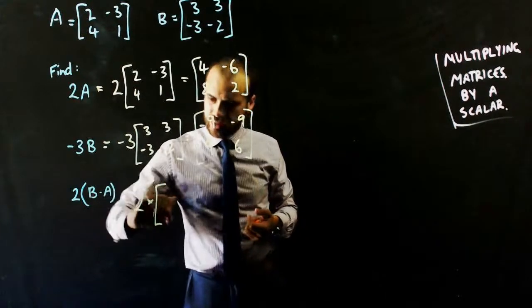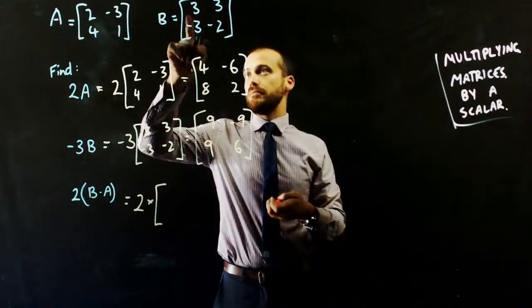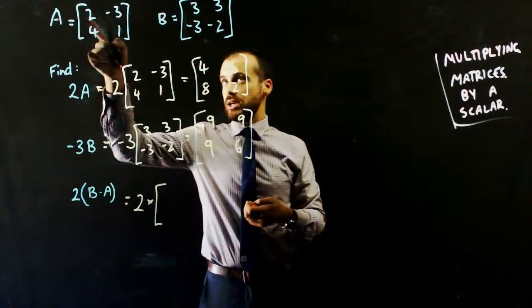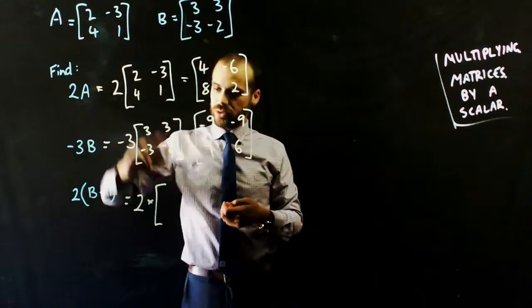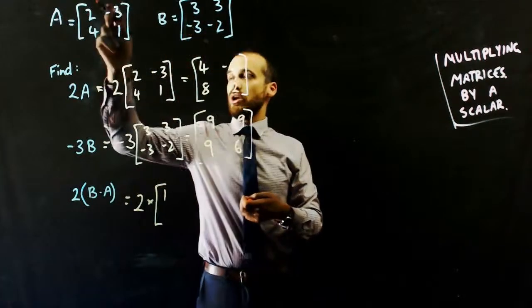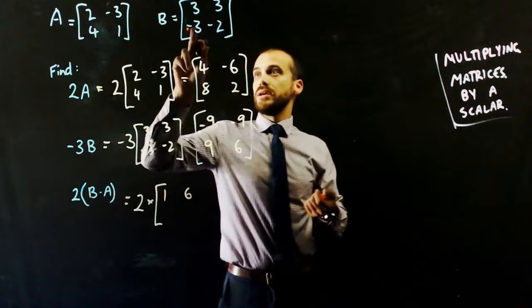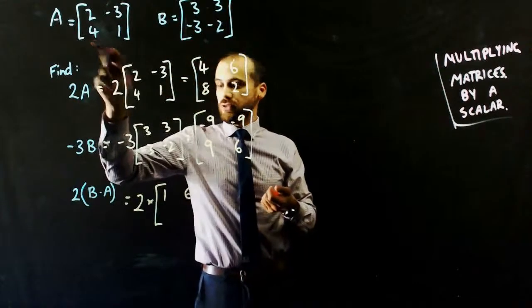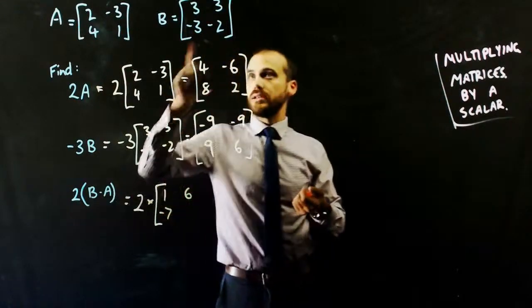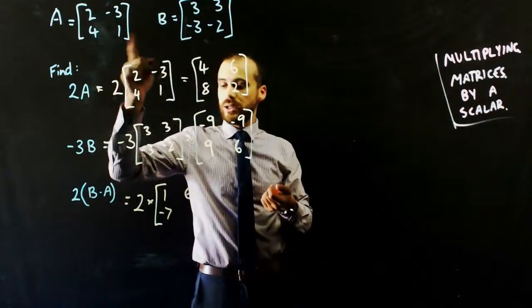So B minus A is going to be: 3 minus 2 is 1. 3 minus negative 3, so 3 minus negative 3 is 3 plus 3, which is 6. Negative 3 minus 4 is negative 7. And negative 2 minus 1 is negative 3.